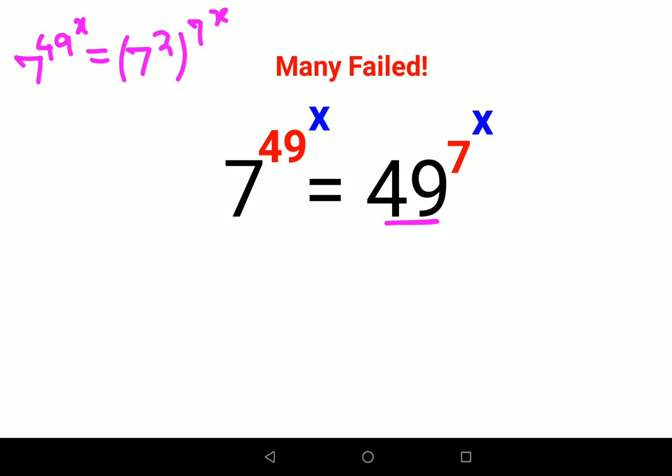Now in this scenario you will see that the bases are same. So if the bases are same, then you can directly equate the indices. And here, this 7 raised to 2, the whole raised to 7 raised to x, can be written as 7 raised to 2 into 7 raised to x. And this is still 7 raised to 49 raised to x.